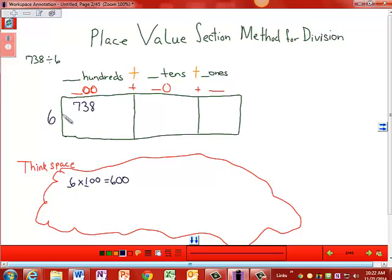Now I'm going to ask myself in my think space, 6 times 200, will that get me close to 738? Underline the basic facts, 6 times 2 is 12. And because, again, I'm dealing with hundreds, I should have two zeros in my product. And that's going to give me 1,200. That's too big. Let's use 6 times 100.